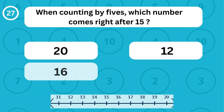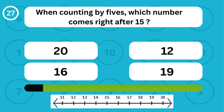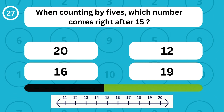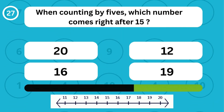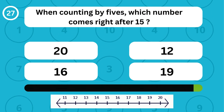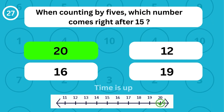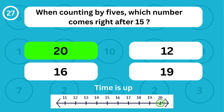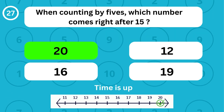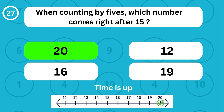When counting by fives, which number comes right after 15? When counting by fives, the number 20 comes right after 15.